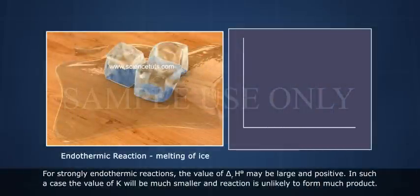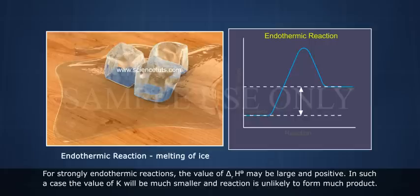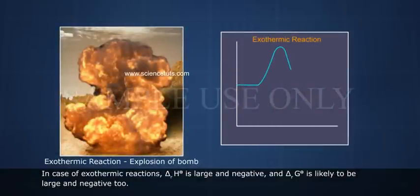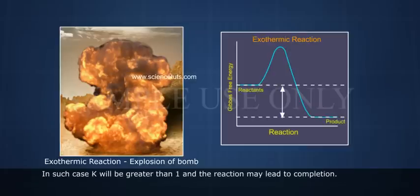For strongly endothermic reactions, the value of ΔRH° may be large and positive. In such a case, the value of K will be much smaller and the reaction is unlikely to form much product. In the case of exothermic reactions, ΔRH° is large and negative, and ΔRG° is likely to be large and negative too. In such a case, K will be greater than 1 and the reaction may lead to completion.